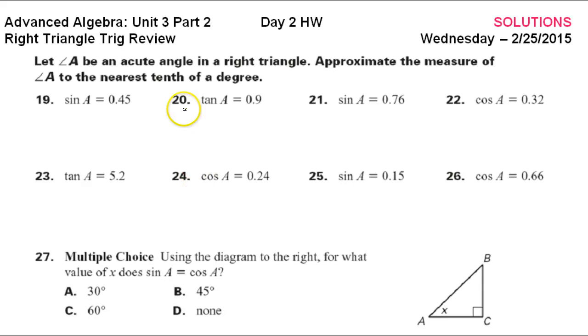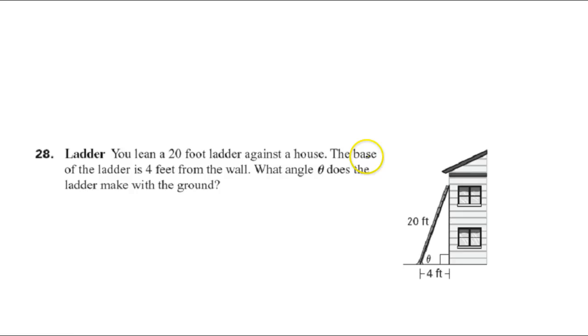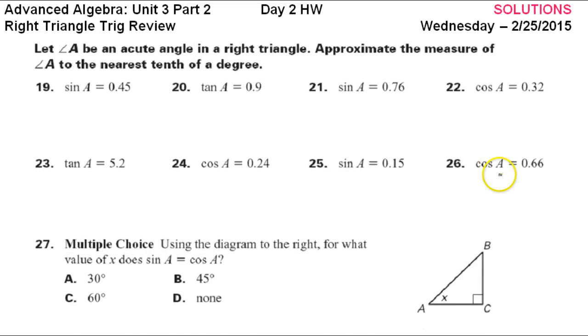All right, in this video we will continue our review of right triangle trigonometry. We will knock out a few problems where we quickly find the missing angle when we're given the sine, the cosine, or the tangent answer. And then we'll get into a thought question and a word problem. All right, but first let's quickly knock out these finding of the angle questions.